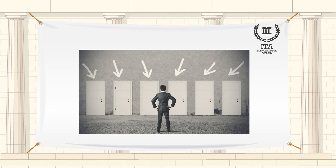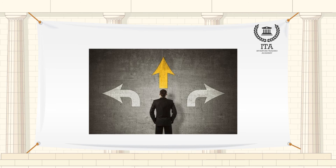Traditional utility theory assumes that people make individual decisions in the context of the big picture, but psychologists have found that they generally compartmentalize, often on superficial grounds. They then make choices about things in one particular mental compartment without taking account of the implications for things in other compartments.